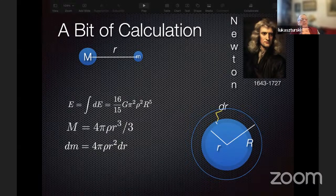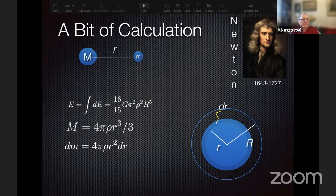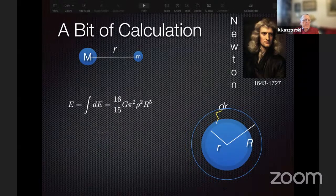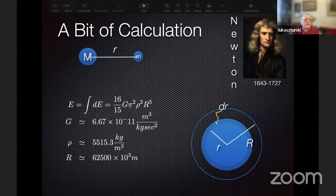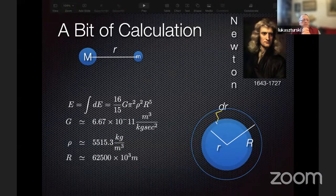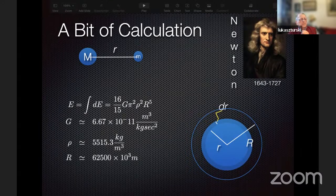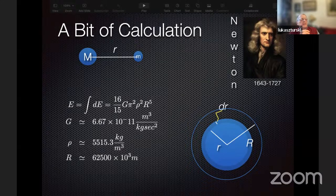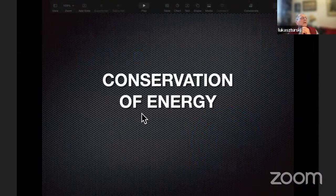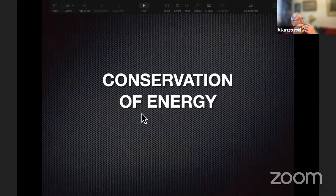That turns out to be proportional to the fifth power of the radius and to the square of the density of the planet. If I use now the values of the parameters, the gravitation constant and the density, which is roughly the density of planet Earth, and if I use for the radius of the planet the radius of our planet, then I can calculate that energy.